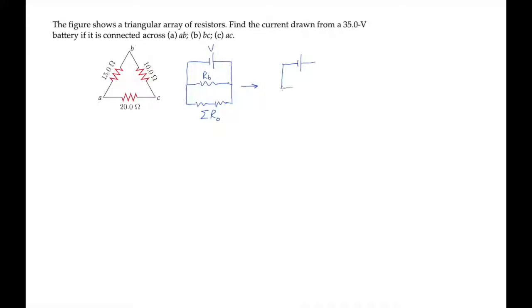So we can draw the equivalent circuit and write the current as the voltage over that equivalent resistance.